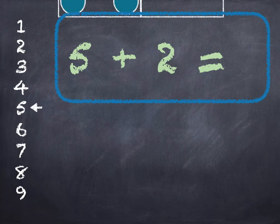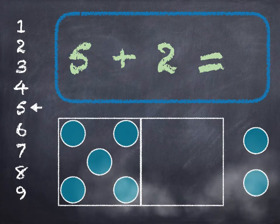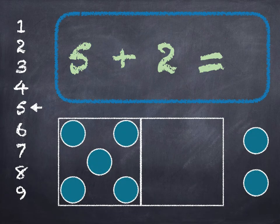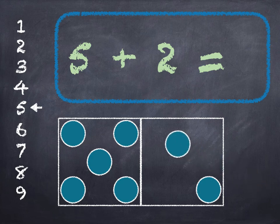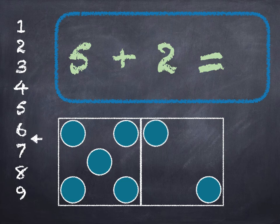5 plus 2. 5 in the box, add 2 on. 5, 6, 7. Start at 5 on the number line and go down 2. 1, 2, we get to 7. 5 plus 2 is 7.